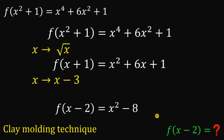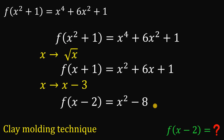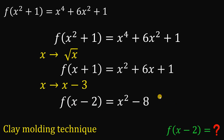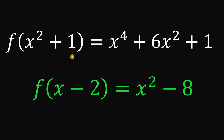This is the function we wanted in this question. Using two moldings — the first molding and the second molding — we arrive at f of x minus 2. Therefore, given f of x squared plus 1 equals x to the fourth power plus 6x squared plus 1, then f of x minus 2 equals x squared minus 8. And as always, we are done.